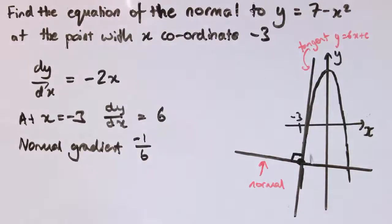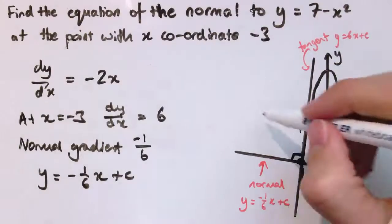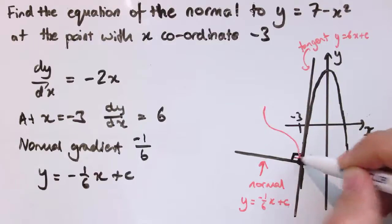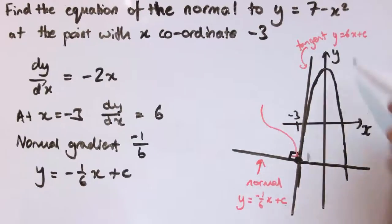So the normal is a straight line, which is of the form y equals minus 1 sixth x plus some constant. So we've got that y equals minus 1 sixth x plus c, and we just need to work out c. As we did with the tangent, well, we know a point on the line because this point here is on the tangent, it's on the normal, and it's on the curve.